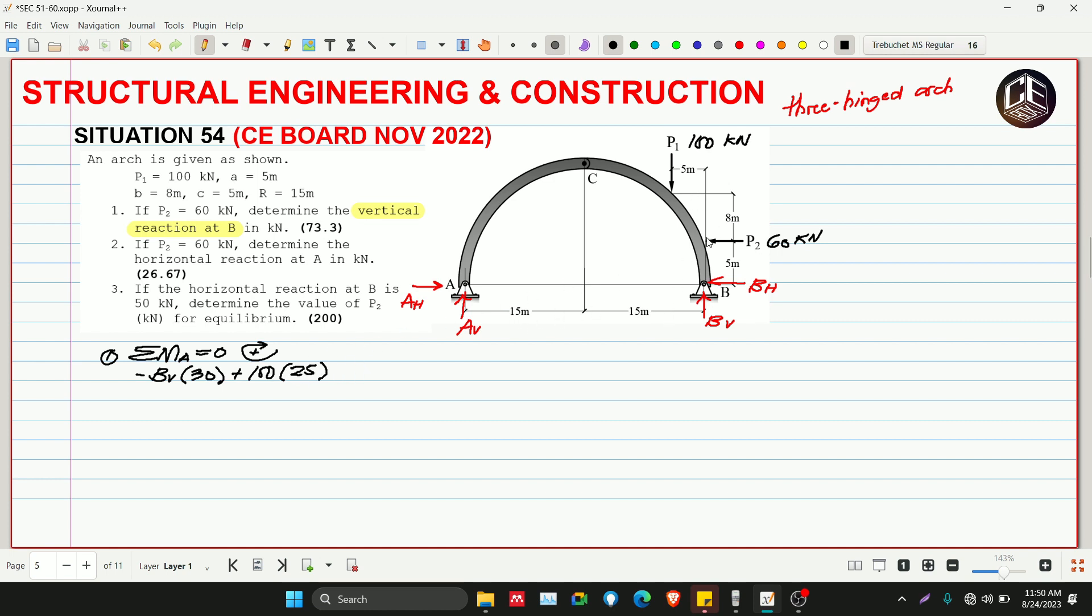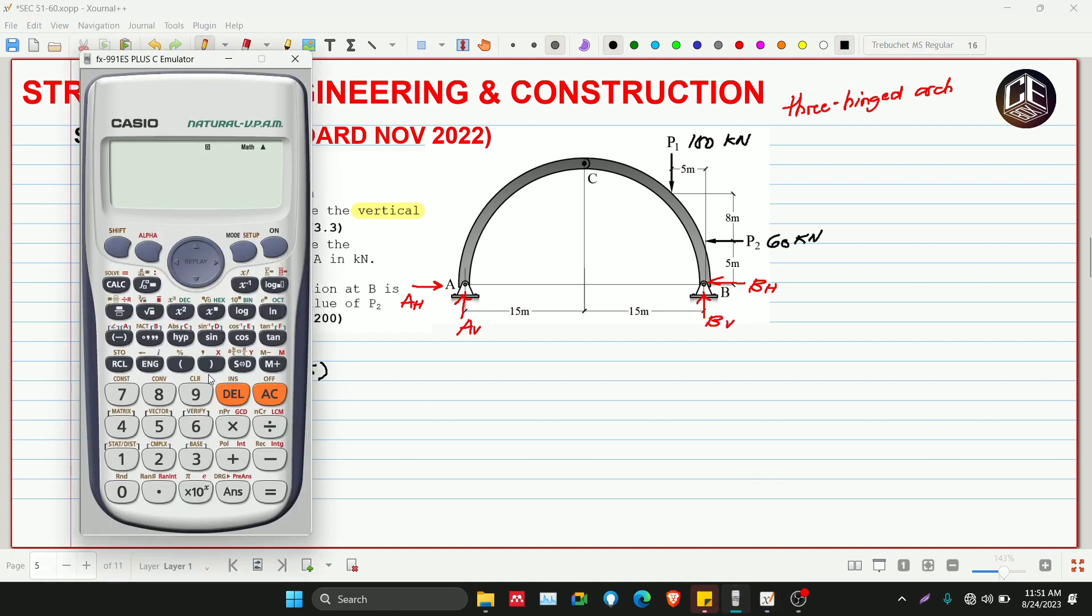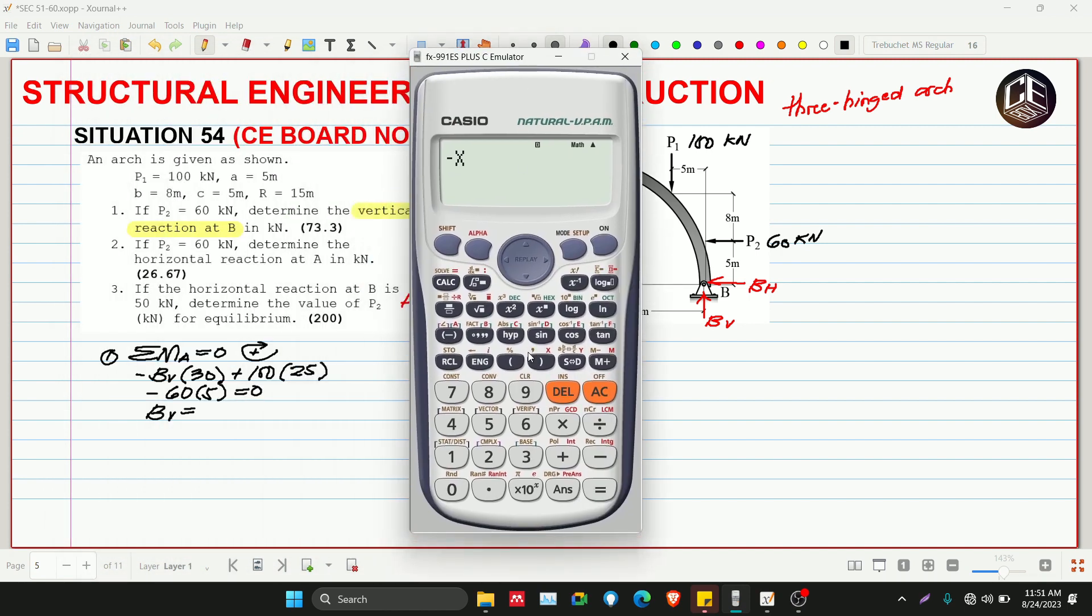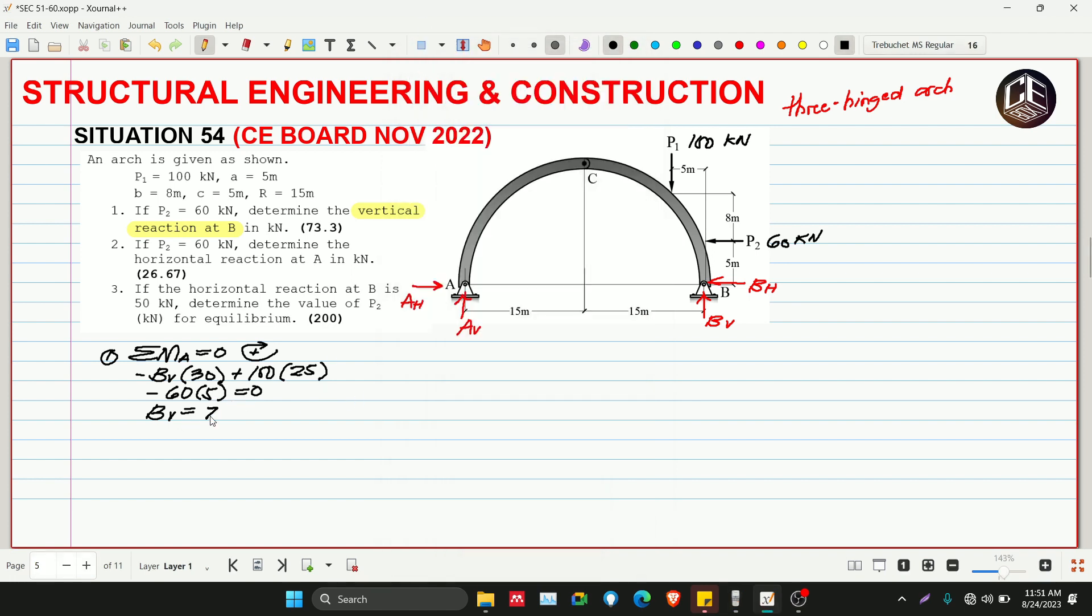P2 rotates counterclockwise, so negative P2, which is 60 kilonewtons, times 5 meters equals zero. Solving for BV: negative BV times 30 plus 100 times 25 minus 60 times 5 equals zero, giving us 73.33 kilonewtons. It's positive, meaning our assumption for the direction of BV is correct, so it's directed upward.